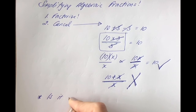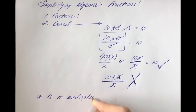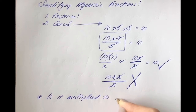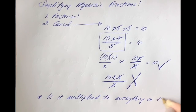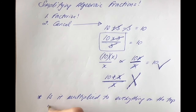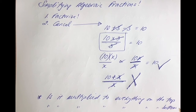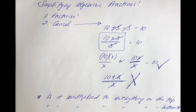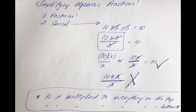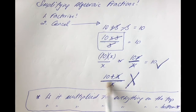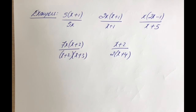Is it multiplied to everything on the top, and is it multiplied to everything on the bottom? Keep reminding yourself of that, because if it's not being multiplied to everything on the top and bottom, the division line will not be able to cancel it out.